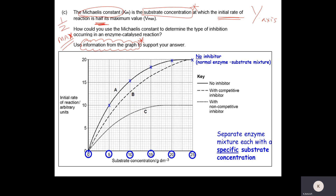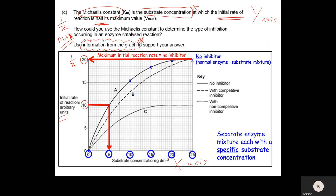The Km is the substrate concentration at which the initial reaction rate is half its maximum. Taking the no-inhibitor mix, the maximum initial rate of reaction is 20 arbitrary units. The Km value is the substrate concentration at which this is half, so half of 20 is 10 arbitrary units, which gives us a substrate concentration of 5 grams per decimetre cubed.